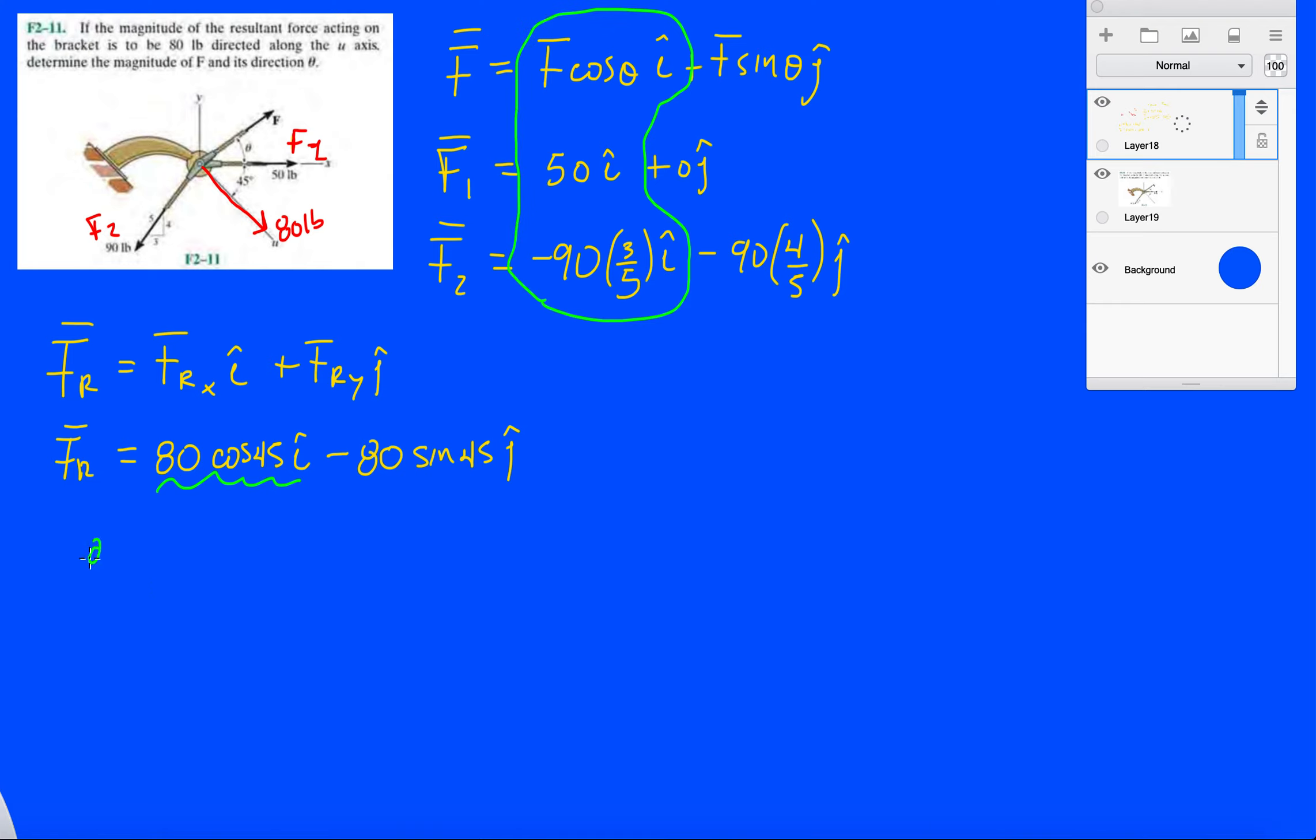Okay, so it's going to be 80 cosine 45 equals F cos theta plus 50 minus 54.